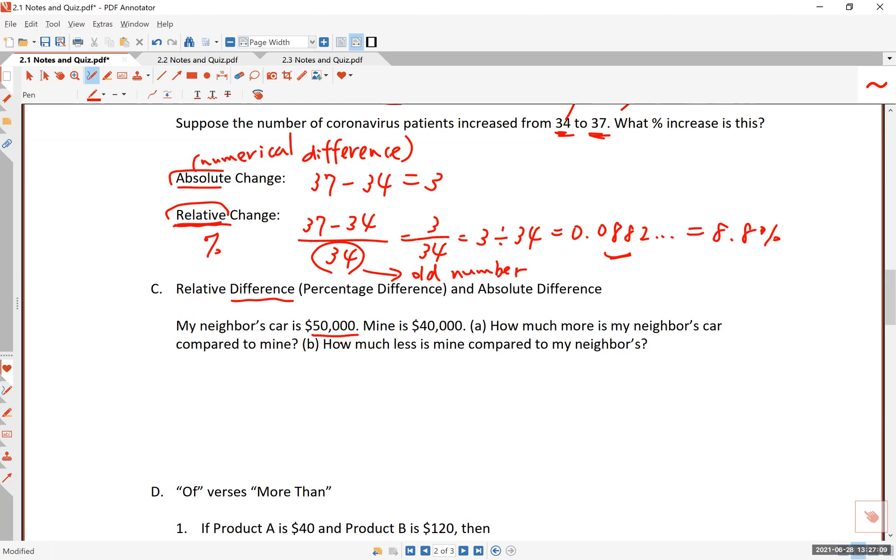Let me give you an example. My neighbor's car is $50,000. Mine is $40,000. And therefore, I am jealous. Well, you may be. But here are the two questions you can ask about this. How much more is my neighbor's car compared to mine? This is the important phrase. Compared to mine, how much more is my neighbor's car? The second question, how much less is my car compared to my neighbor's? Now the reason I am highlighting, circling these phrases is because these circled phrases give me the reference number, give me the idea on which number to use as the base or as the denominator of the comparison.